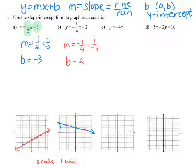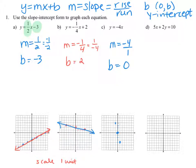In part c, we have y equals negative 4x. The slope is negative 4, written as a fraction over 1, and the y-intercept b is 0, so this line goes right through the origin. From the y-intercept, move down 4 units and to the right 1 unit. You can also go up 4 units and to the left 1 unit — that indicates a negative slope — and graph the line through those points.